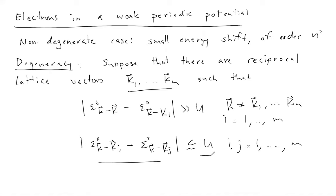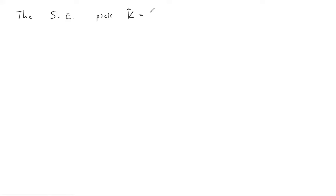Remember the approach we took last time: we wrote down the Schrödinger equation, found an expression for the wave function coefficients in terms of the unperturbed wave function coefficients and energies, then substituted back to find an expression for the perturbed energies. Let's do that again. We write down the Schrödinger equation with big K equal to Kᵢ. The equation is: the perturbed energy minus the unperturbed energy at k − Kᵢ, times the coefficient C(k − Kᵢ), equals...